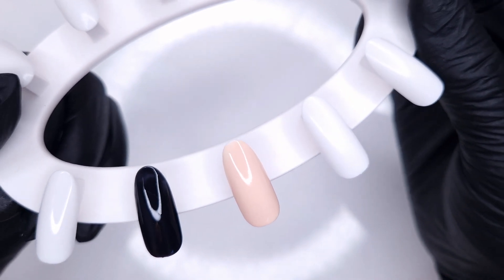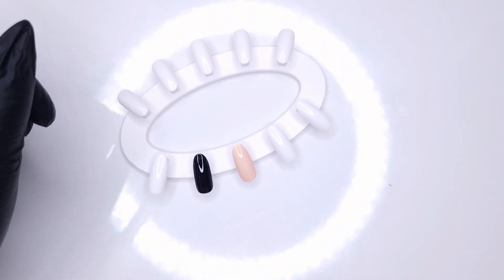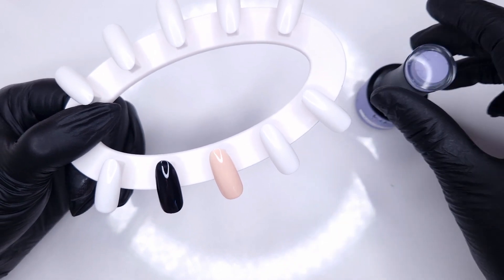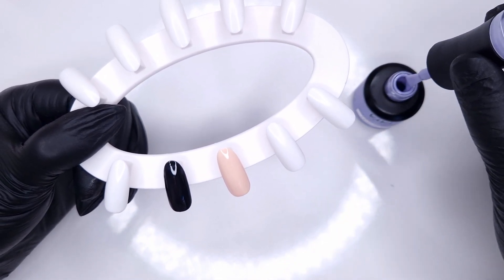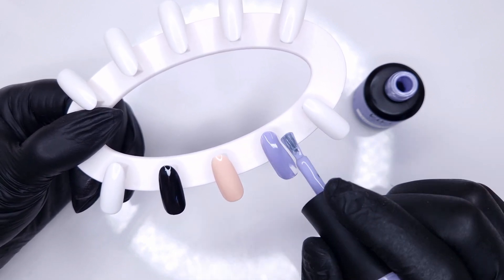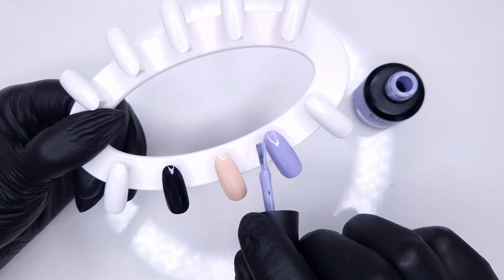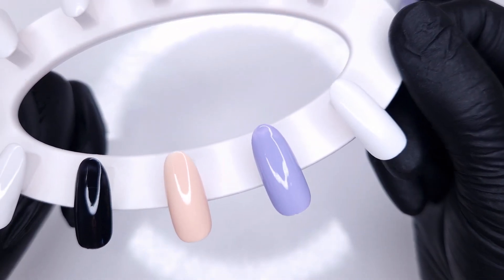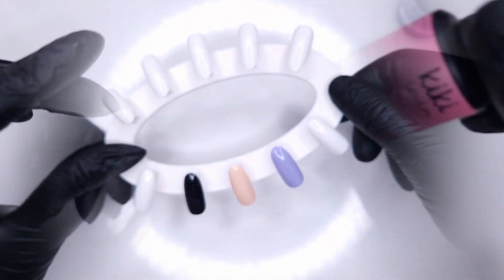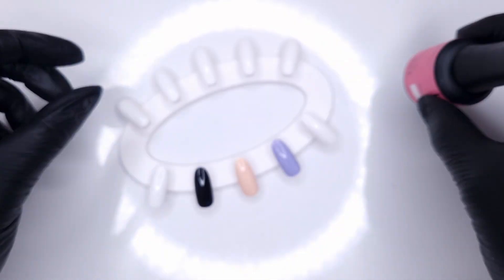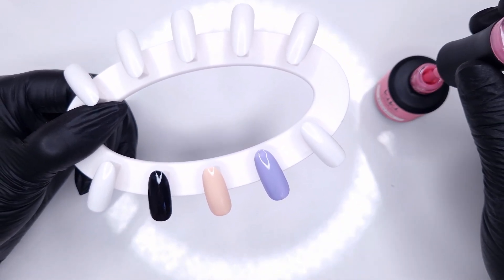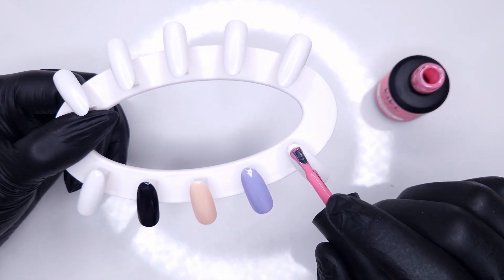So by bringing on a Hema Free line of gel polish we are opening up the accessibility to gel polishes to anyone out there who has an allergic reaction to the Hema because it's just going to be broadening the amount of people who Kiki London can reach and who you can reach in your salon because there are a lot of people out there who are allergic to the Hema. If you're going to be allergic to something in gel polish or nail products in general it usually is the Hema.